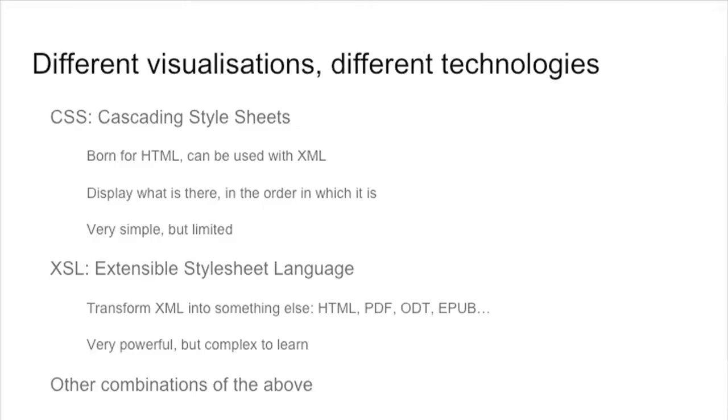CSS is a bit less powerful when applied to XML than it is for HTML web pages, and it is definitely less powerful than XSL, Extensible Style Sheet Language, which is able to take your XML and transform it into something else — like an HTML file, a PDF file, an ODT OpenOffice file, or an EPUB file. So it is very powerful, but it's also not the easiest thing to learn. There is one extra module on this course about XSLT, so if you feel brave, you might want to take it and see how it works in practice.